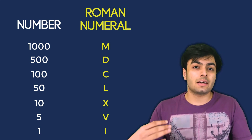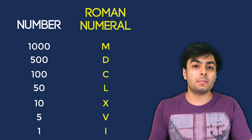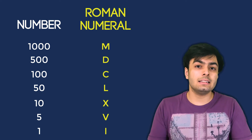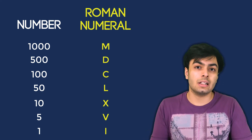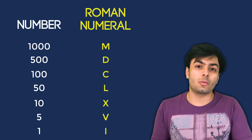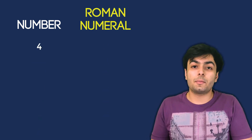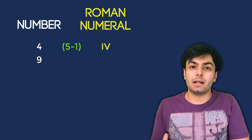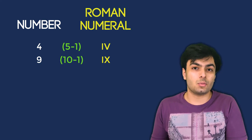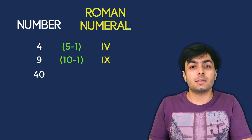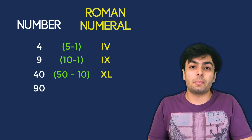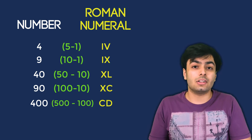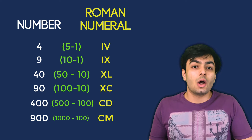However, Roman numerals have this additional rule where one letter can only appear three times in a row. This means that numbers like 4, 9, 40, 90, 400, and 900 have a different representation. 4 can be represented by IV, which can also be seen as 5 minus 1. 9 can be represented by IX, which can also be seen as 10 minus 1. And following the same trend, we get 40 to be represented by XL, 90 to be represented by XC, 400 to be represented by CD, and 900 to be represented by CM.